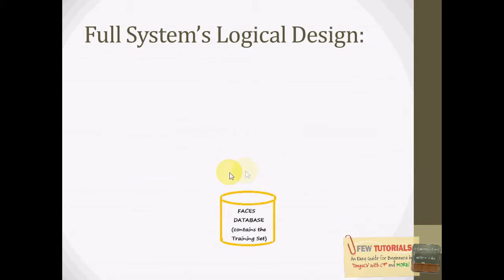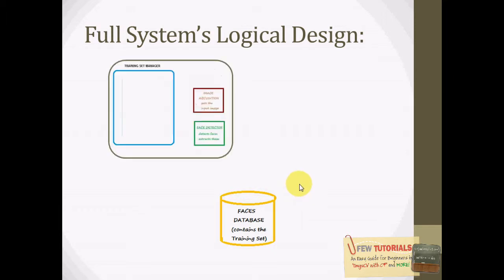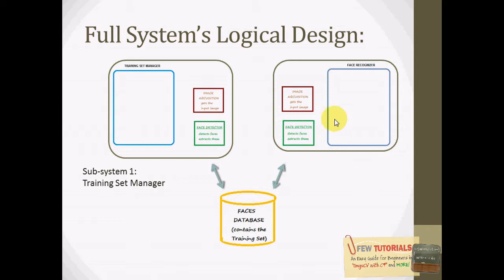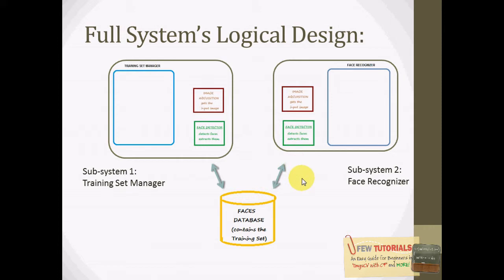The full system's logical design becomes something like this, where the faces database is a common component being worked on by both subsystems. Subsystem one consists of the training set manager, image acquisition, and face detector components along with the faces database. Subsystem two consists of the face recognizer, image acquisition, and face detector, also along with the faces database. This is the overall logical design of our complete system, and partitioning it into two parts makes it easier to understand how to actually implement and code it.